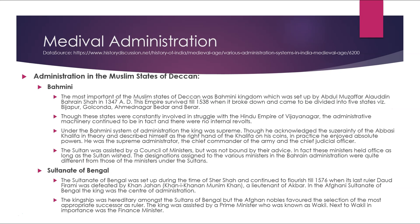Administration in the Muslim states of the Deccan: The Bahamani Kingdom was the most important Muslim state of the Deccan, set up by Abdul Muzaffar Alauddin Bahman Shah in 1347 AD. The empire survived till 1538 when it broke down into five states: Bijapur, Golconda, Ahmadnagar, Bidar and Berar. Under the Bahamani system, the king was supreme. Though he acknowledged the suzerainty of the Abbasid Khalifa in theory, in practice he enjoyed absolute powers and was the supreme administrator, chief commander of the army, and chief judicial officer. The sultan was assisted by a council of ministers but was not bound by their advice.